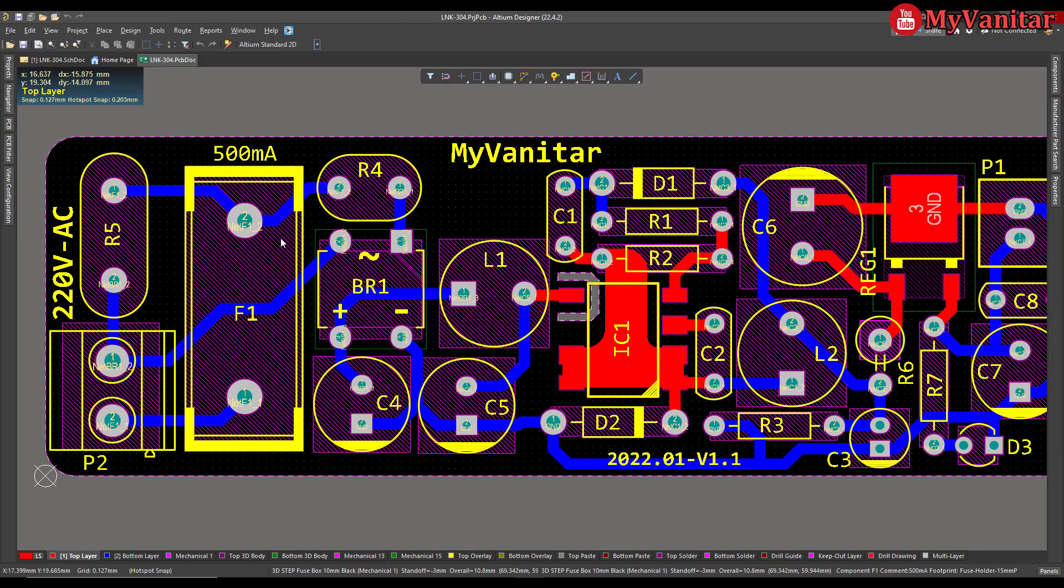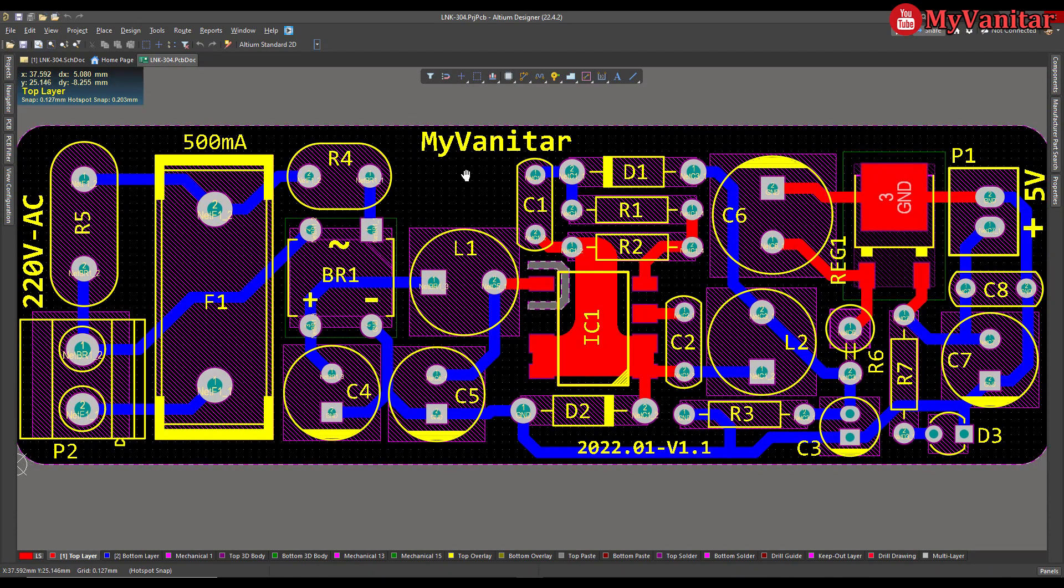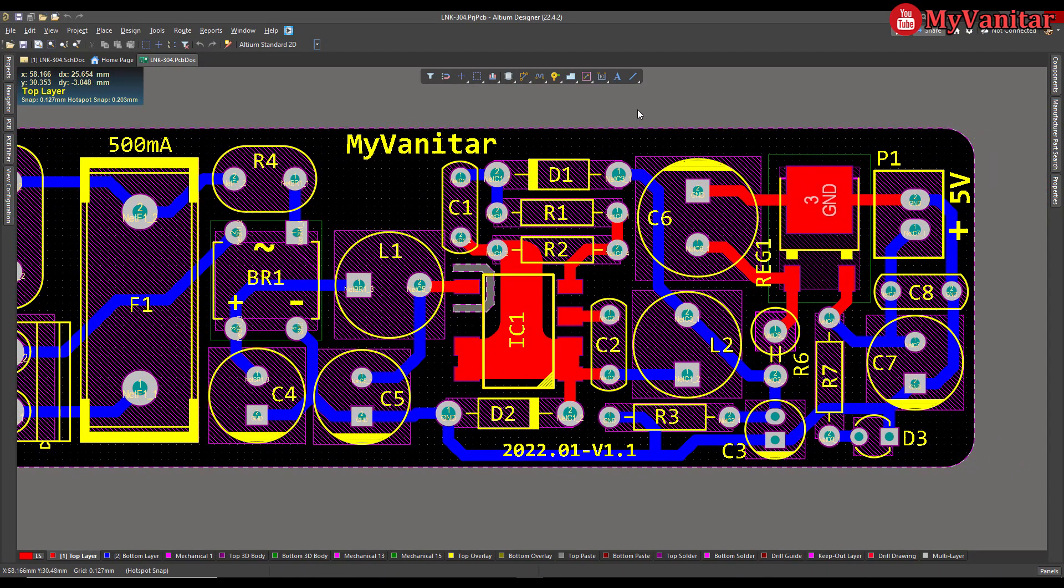If I go to the PCB, as I said, this is the mains input, and you can see the protection, bridge rectifier, capacitors, and do you see this isolation gap?